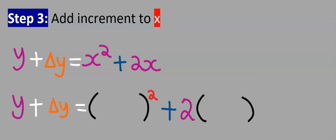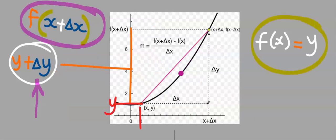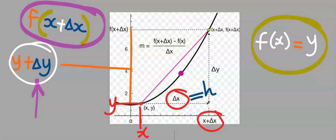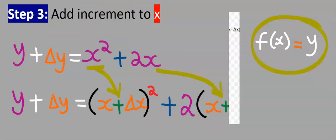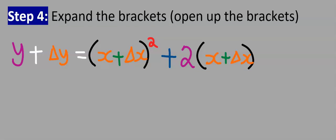Step number three: add increment to x. That is, wherever I see x I'm going to add an increment to x. So x becomes x plus Δx. At times this change in x can be replaced with h. On the y-axis this change is Δy, and on the x-axis it will equally be Δx. So wherever I see x I will write x plus Δx.